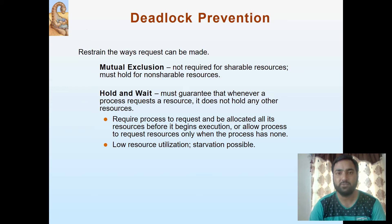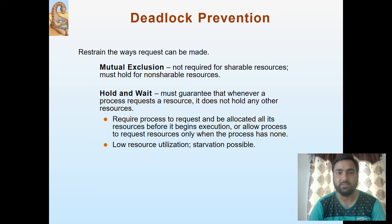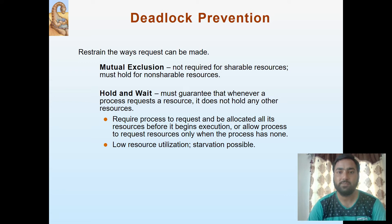The first condition is mutual exclusion. Mutual exclusion is to be managed in the system to prevent deadlock. It is not required for shareable resources but must hold for non-shareable resources. That means we have to implement mutual exclusion such that it is applied for non-shareable resources, but if the resources are shareable, then mutual exclusion is not required.